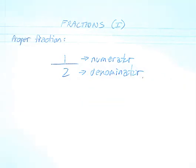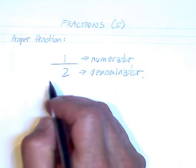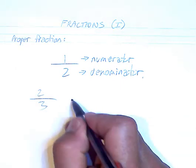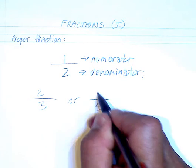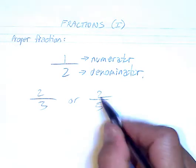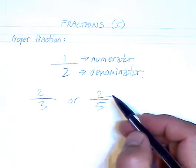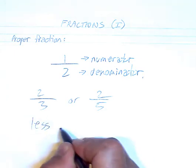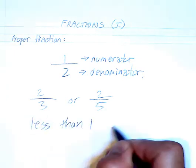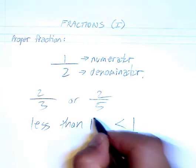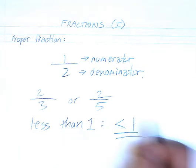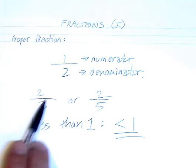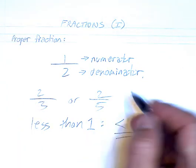So in a proper fraction, the denominator is always bigger than the numerator. The bottom is always bigger. So this is always less than 1. These are always less than 1 because you always got 2 or 3 or 1 3rd or 2 3rds or 2 5ths, 3 5ths, 4 5ths.